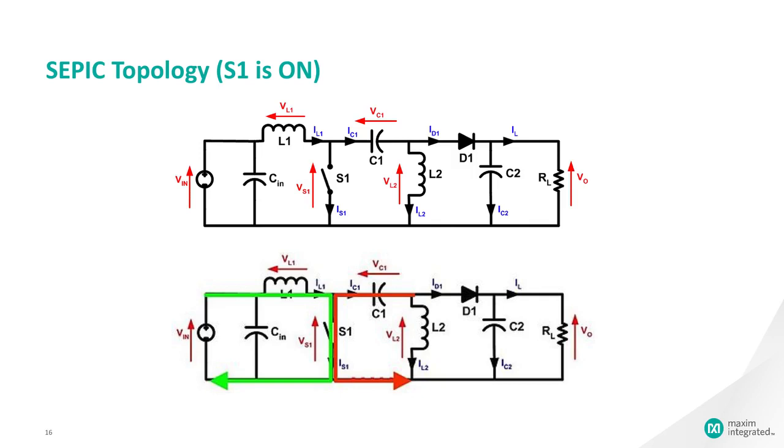When switch S1 is turned on, current IL1 increases and the current IL2 goes more negative. Mathematically, it decreases due to the direction. The energy to increase the current IL1 comes from the input source.